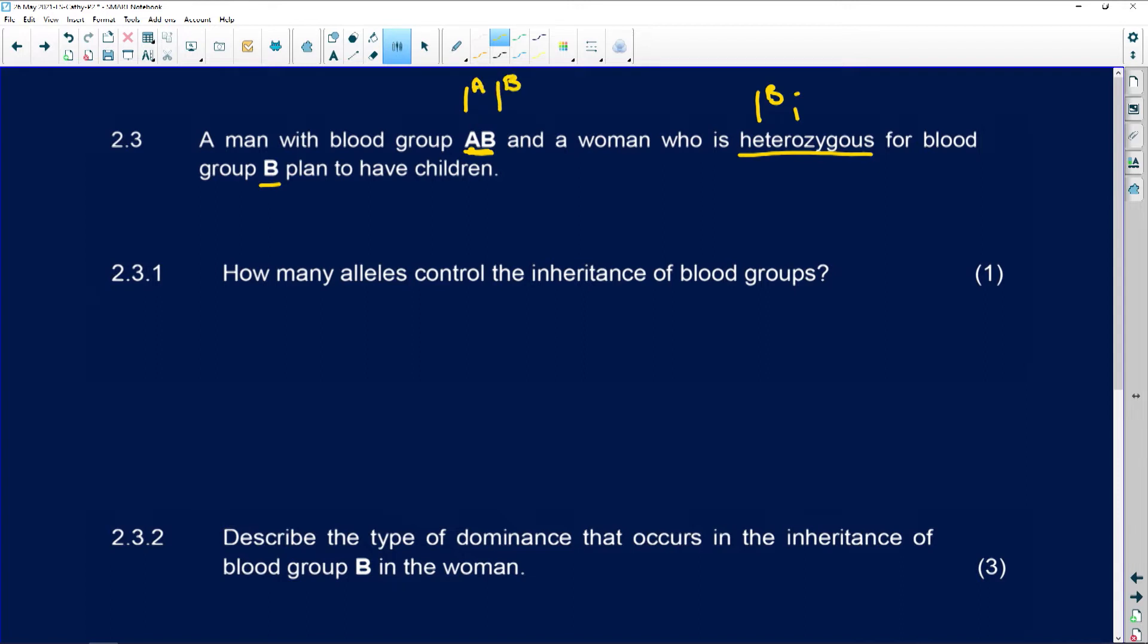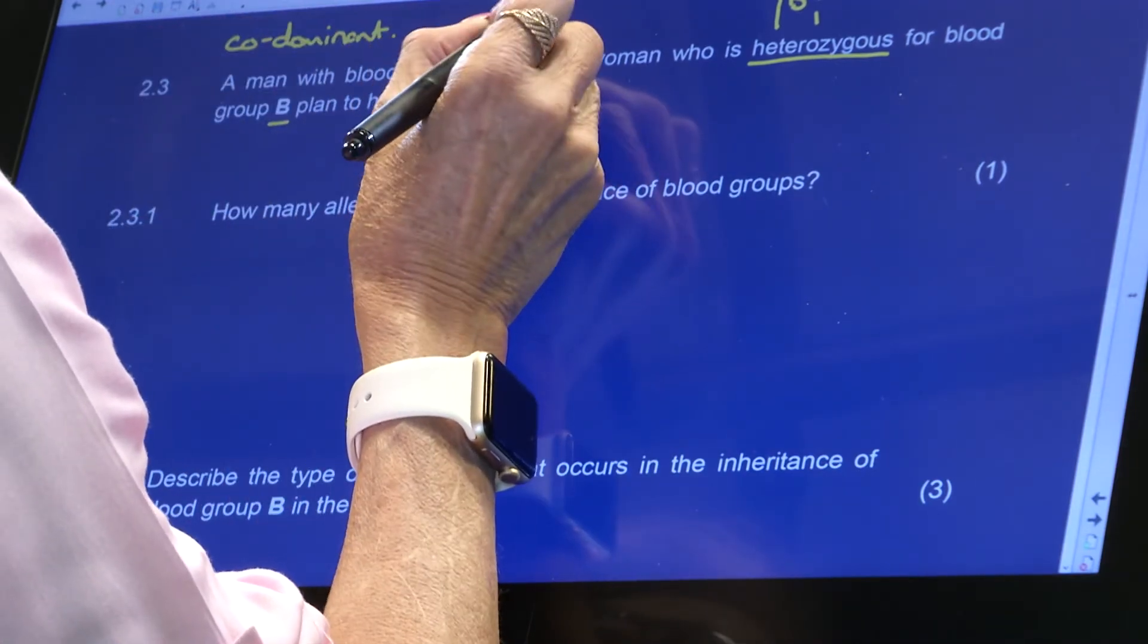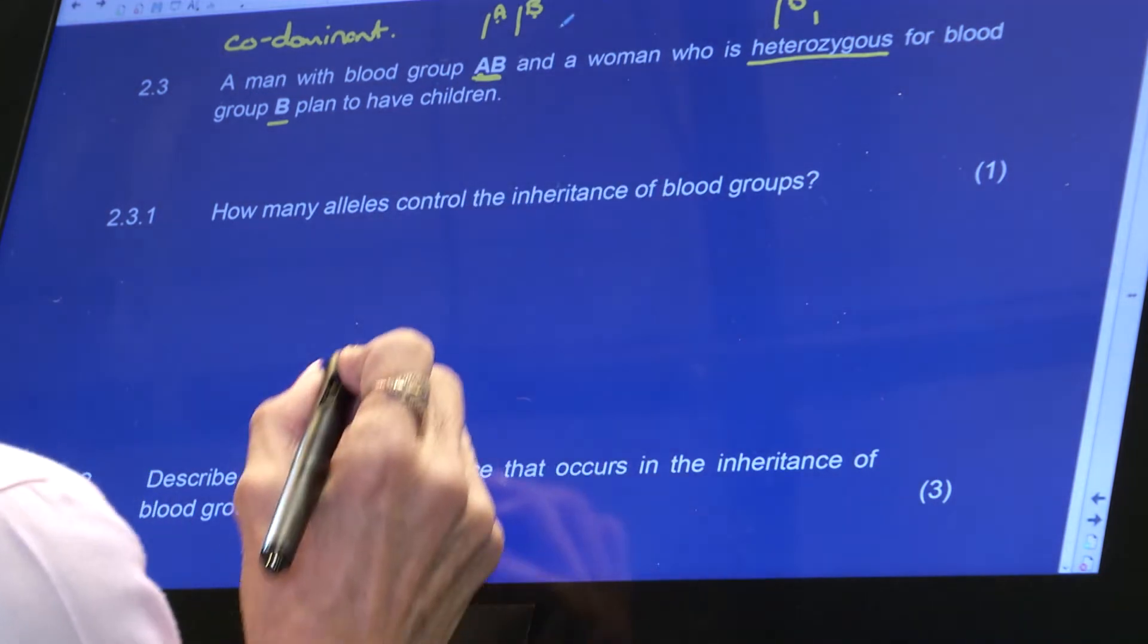And remember that A and B are co-dominant. So they equally dominate, so they will work together.